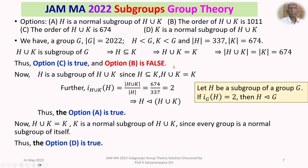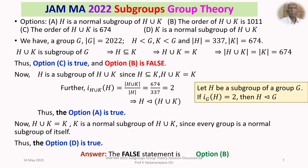So the false statement is Option B. That is the detailed discussion of the solution of the problem, which is based on the properties of subgroups of a given group from the section group theory. I am sure that you have understood the solution of this problem, and I wish you all the best.